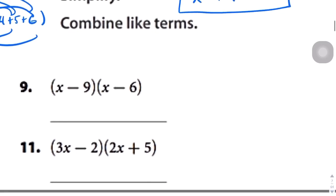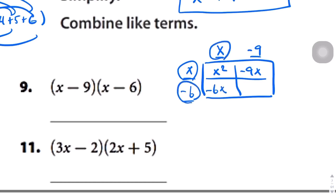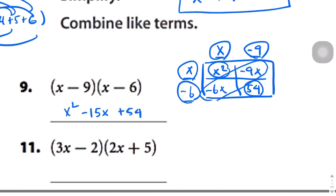Question number 9: let's draw a two by two box since we're multiplying two binomial terms. x minus 9 on top, x minus 6 on the side. x times x gets us x squared, x times negative 9 gets us negative 9x, negative 6 times x gets us negative 6x, and negative 6 times negative 9 gets us positive 54. Negative 6 and negative 9 combined form negative 15x, and the last term is 54. So x squared minus 15x plus 54.